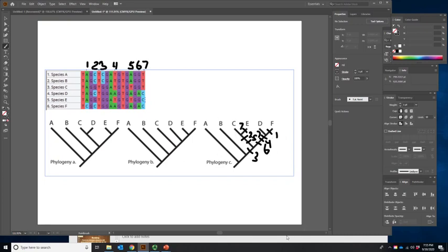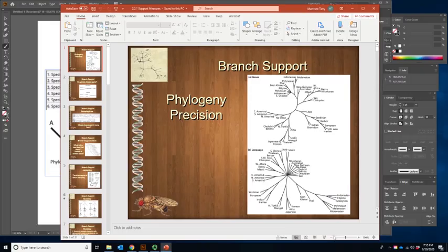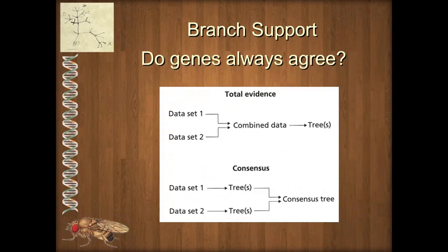That is just an example of how data can support some parts of trees better than others. There are five different branch support methods we are going to talk about, and in each one we'll give you an overview. Before we do that, there's an argument about whether you should always combine data — meaning if you've got an 18S gene and a protein coding gene, do you combine them into one big matrix and then make a tree, or do you figure out trees and then find the consensus tree, kind of like a super tree method? Most of the evidence shows we should probably always combine data as long as we can.